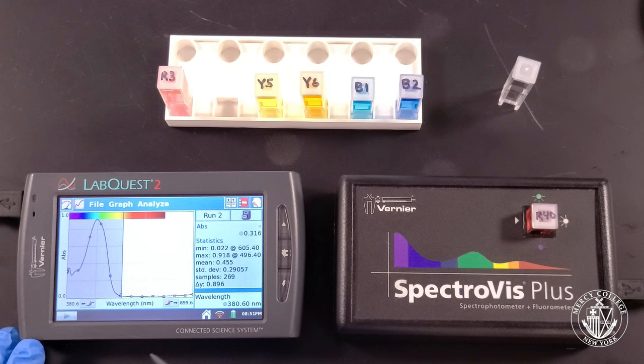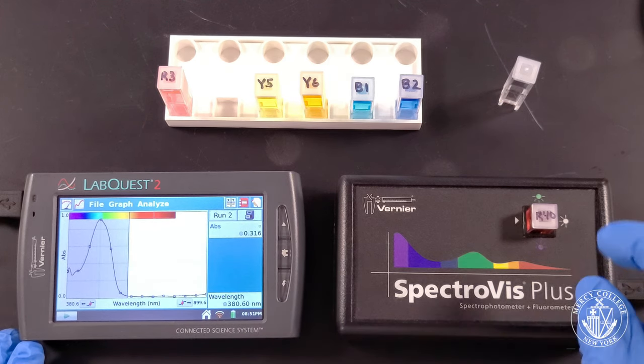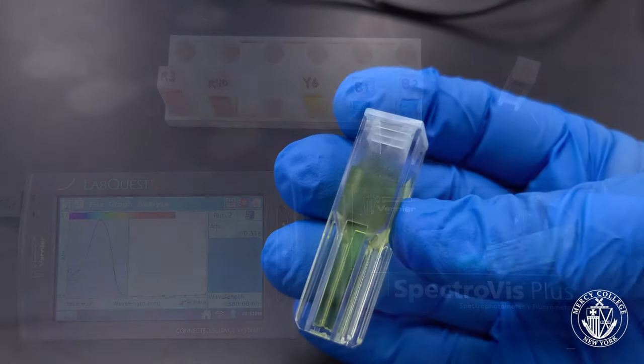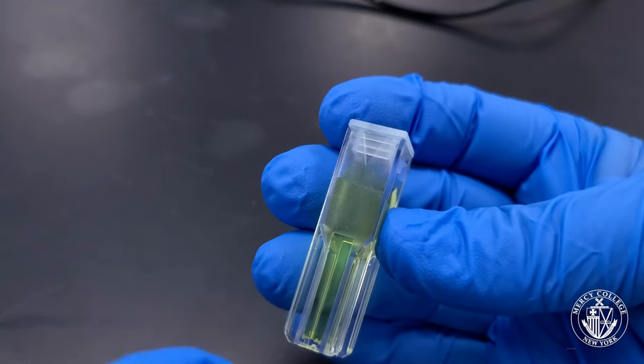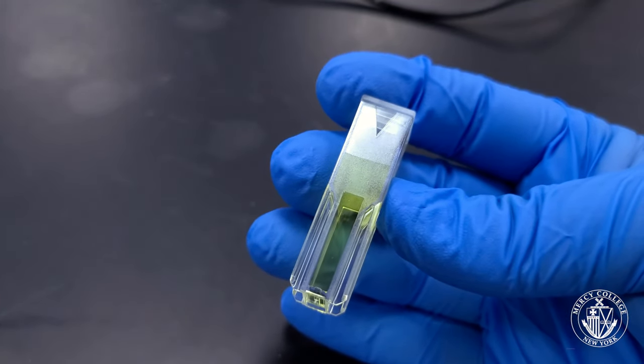Again select Statistics from the Analyze menu to clear the Statistics panel on the right. Remove your sample from the spectrophotometer and select another sample to analyze. Be sure to use gloves when handling your cuvettes. Dust or fingerprints can be removed using a chem wipe or soft cloth.